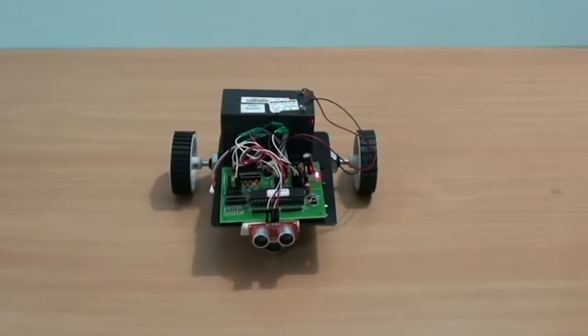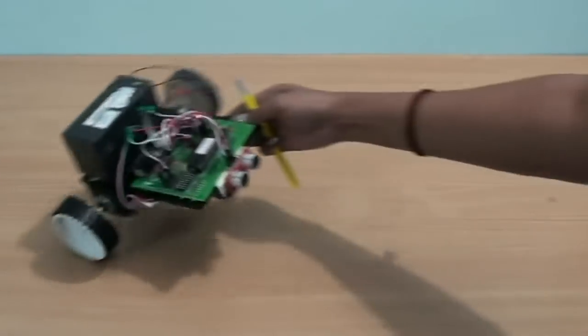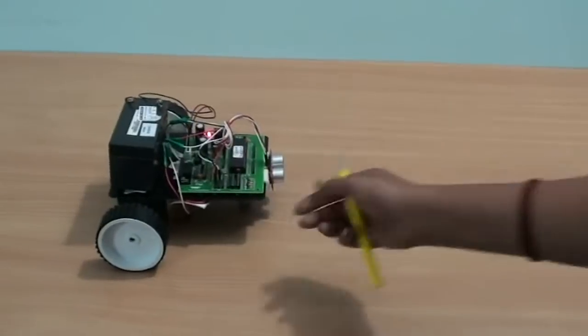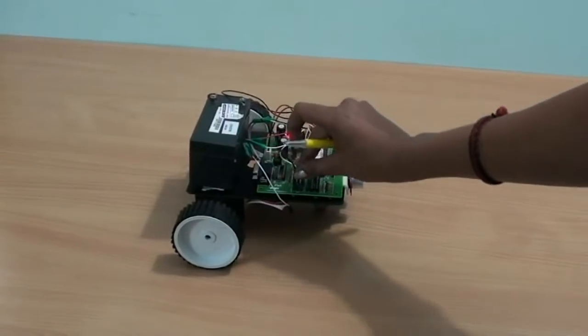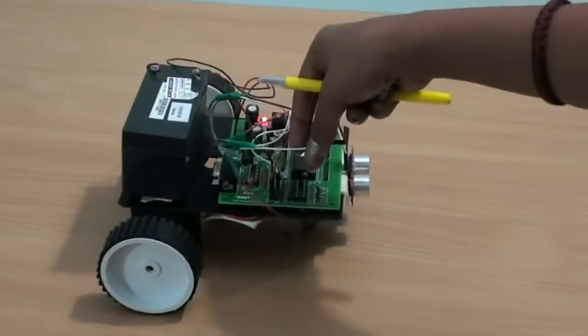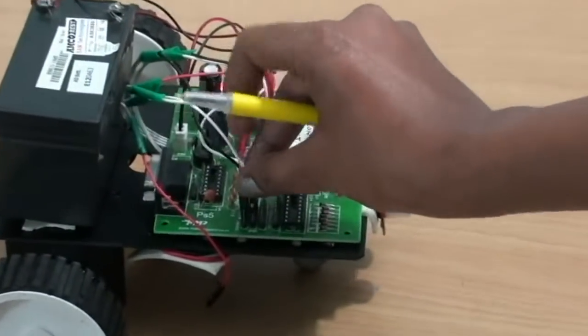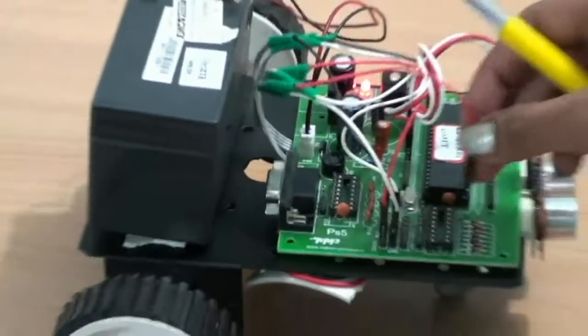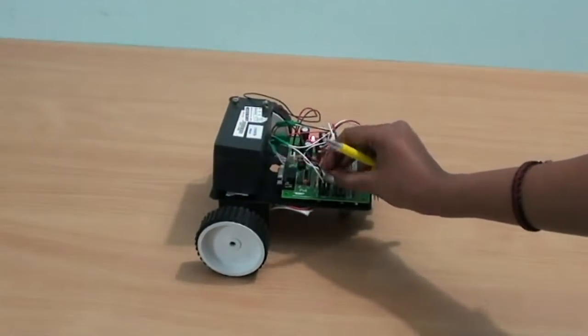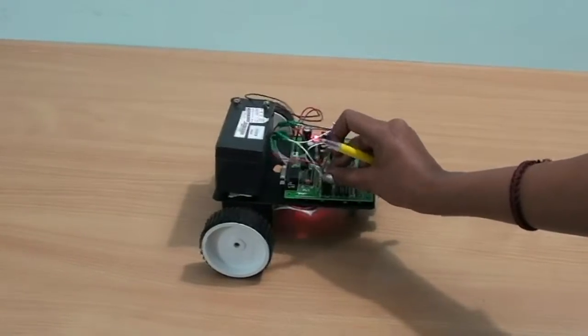Let me now show you the demo of this robot. You can see the white probe which is the ground and the red one is the 12-volt power supply. As soon as the power is supplied, the robot starts moving.